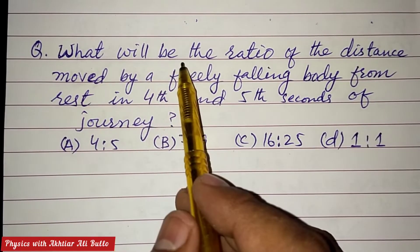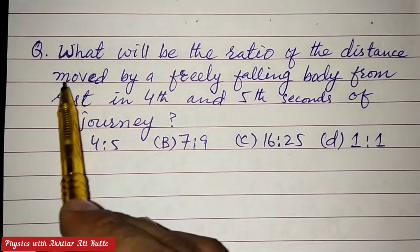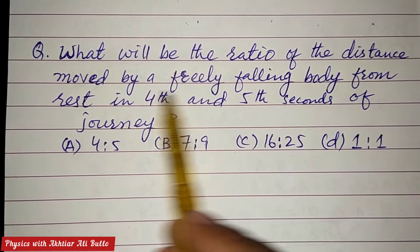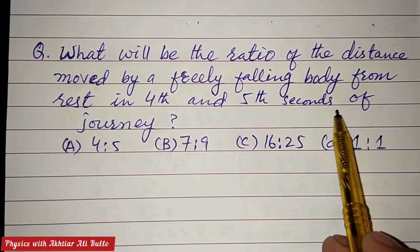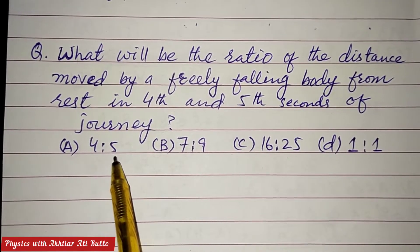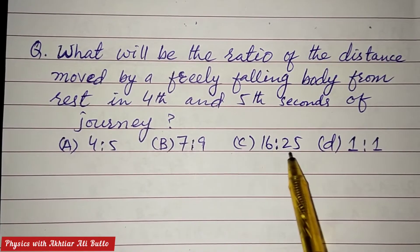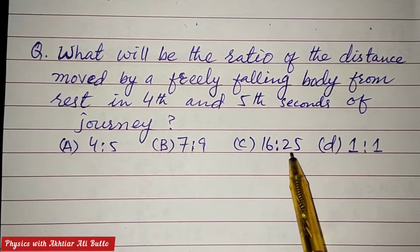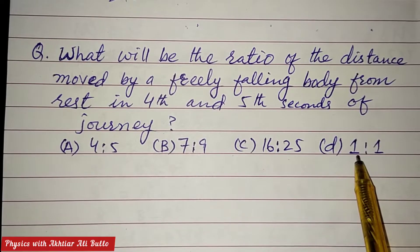The question is: what will be the ratio of the distance moved by a freely falling body from rest in the fourth and fifth seconds of its journey? Option A: 5 ratio 7, Option B: 7 ratio 9, Option C: 16 ratio 25, Option D: 1 ratio 1.